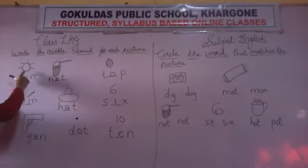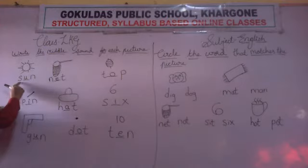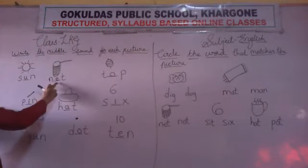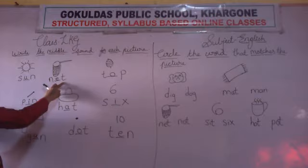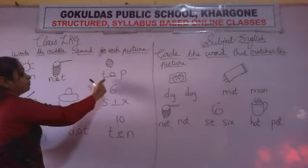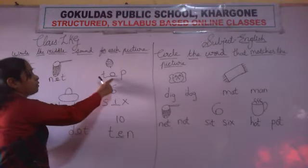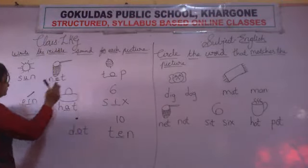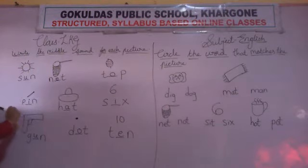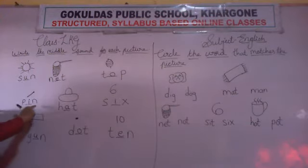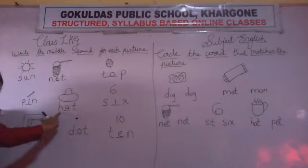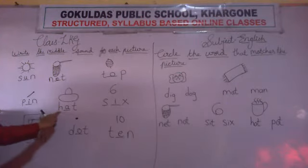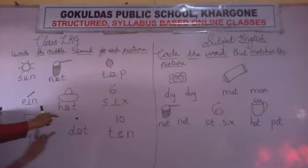Let us see: sun — S-U-N. Net — N-E-T. Top — T-O-P. Pin — P-I-N. Hat — H-A-T.